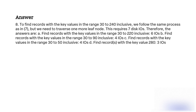Query 8: To find records with key values in the range 30 to 240 inclusive, we follow the same process as in Query 7, but we need to traverse one more leaf node. This requires 7 disk I/Os.